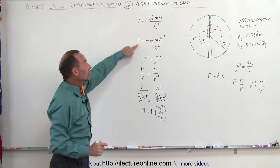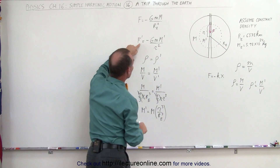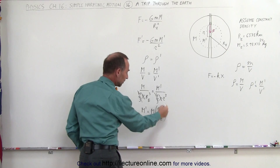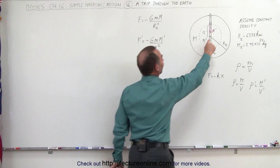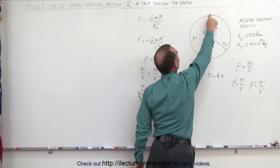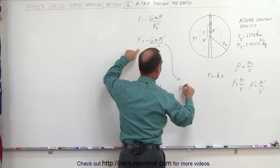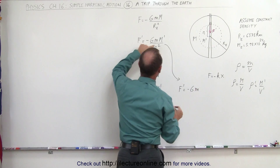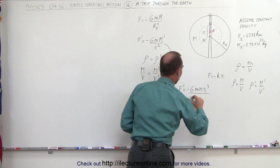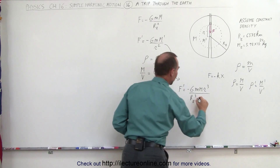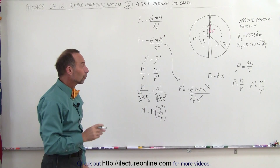Now we can express F prime, the force on the object at position r, as minus G times m times m prime — where m prime equals M times r cubed over the radius of the earth cubed — all divided by r squared. The r squared in the denominator cancels with two powers of r in the numerator, giving us the force experienced by the object anywhere between the surface and the center of the earth.